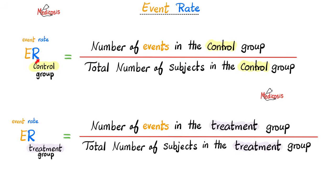What do I mean by event rate? Event rate means the number of events in a certain group divided by the total number of people in that group. There is an event rate for the control group — control events over control total — and an event rate for the treatment or exposed group, which could be exposed to something good or something bad.